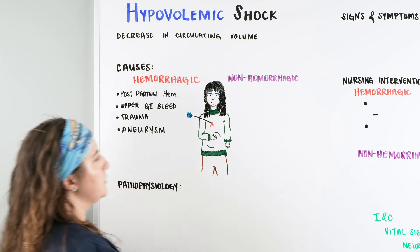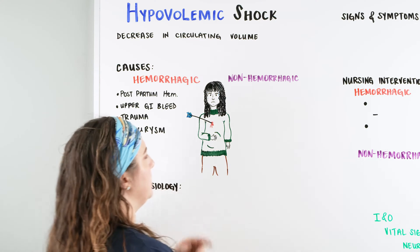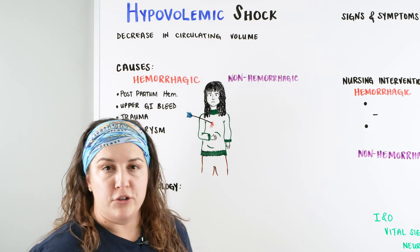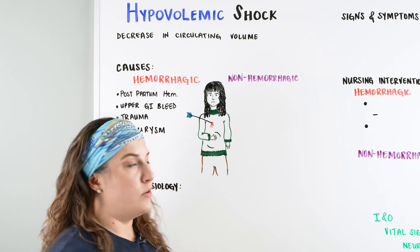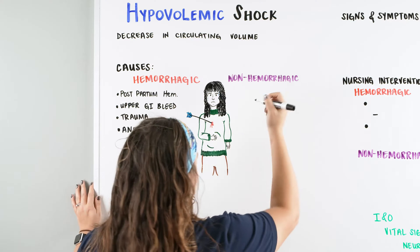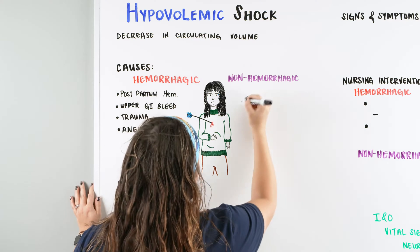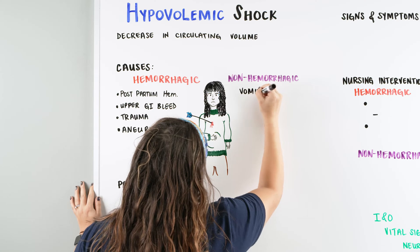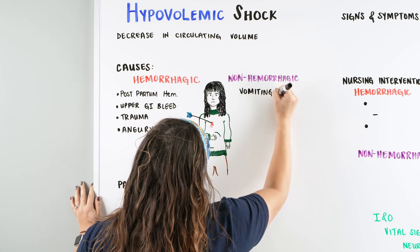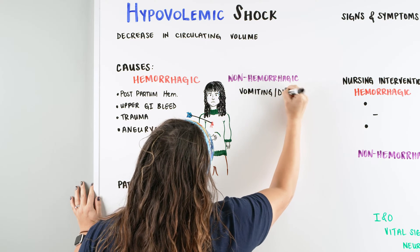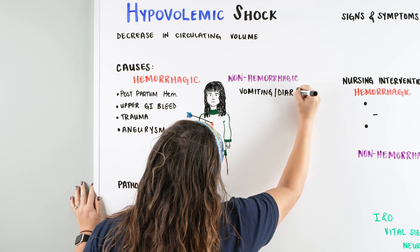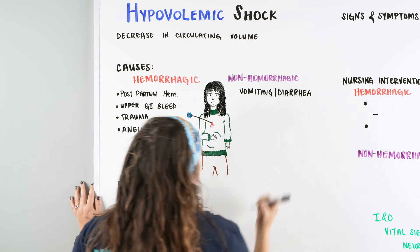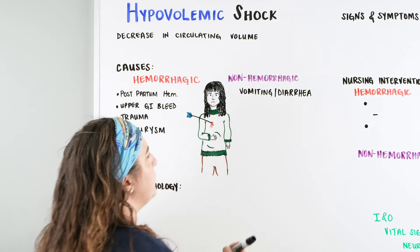On the other end of this, we're going to talk about ones that are non-hemorrhagic — somebody that's not necessarily bleeding out, but having some other issues with their fluid, having a depletion in their fluid. An easy one to think about right away is a patient that is vomiting a lot or having diarrhea — they're losing a lot of fluid that way.